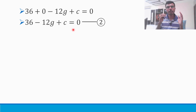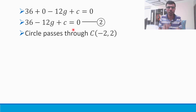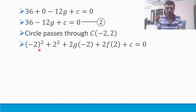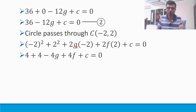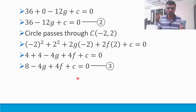For the third equation, the circle passes through C(-2, 2). So put x = -2 and y = 2 into the equation x² + y² + 2gx + 2fy + c = 0. Simplifying: (-2)² + 2² + 2g(-2) + 2f(2) + c = 0 gives 4 + 4 - 4g + 4f + c = 0, so 8 - 4g + 4f + c = 0. This is my third equation.